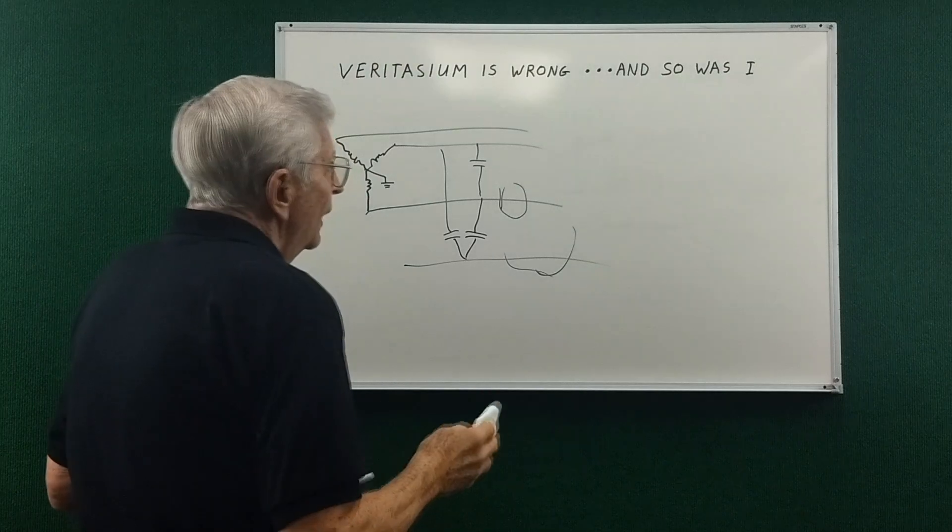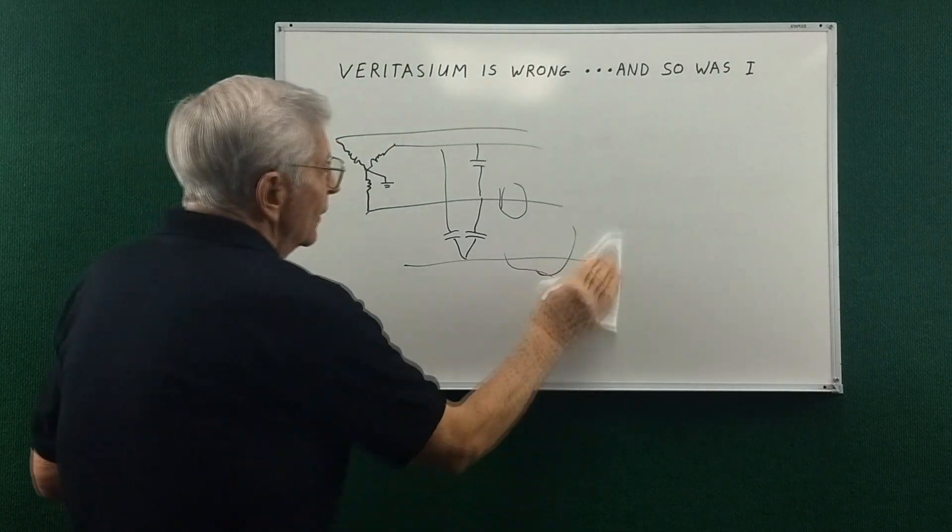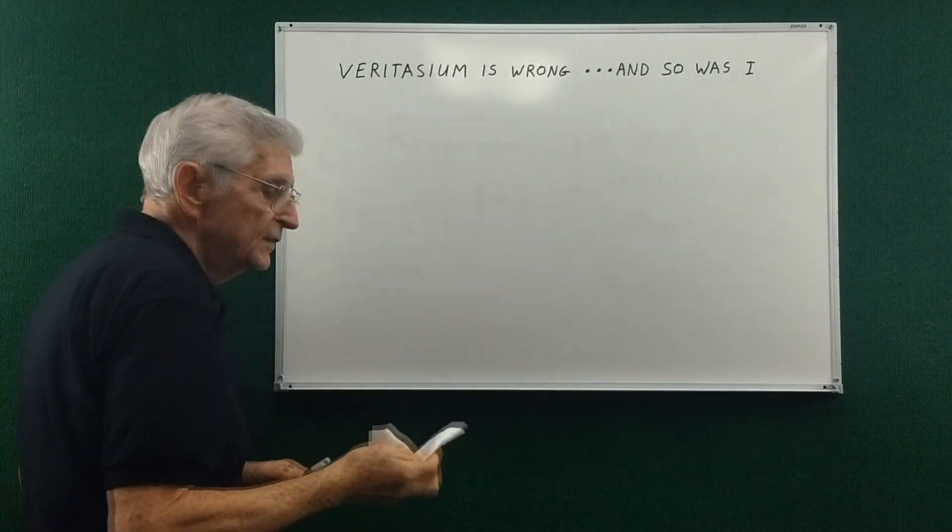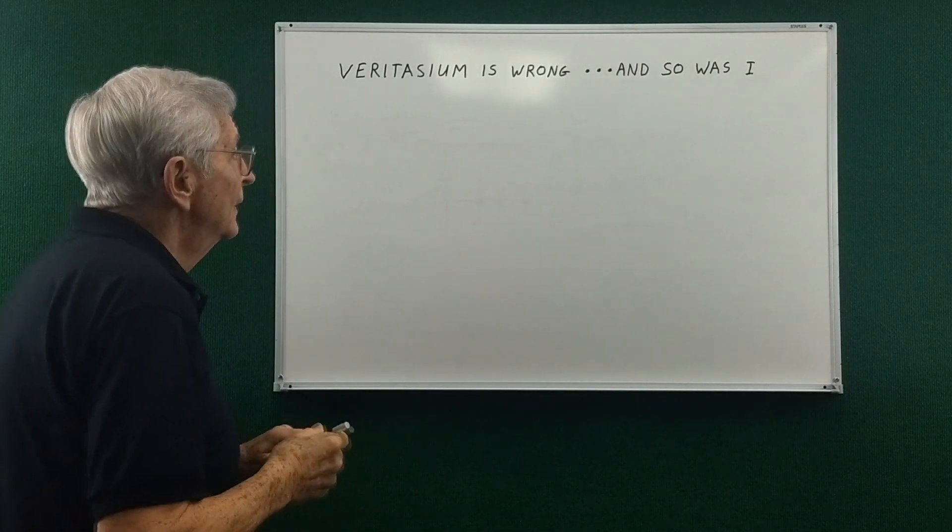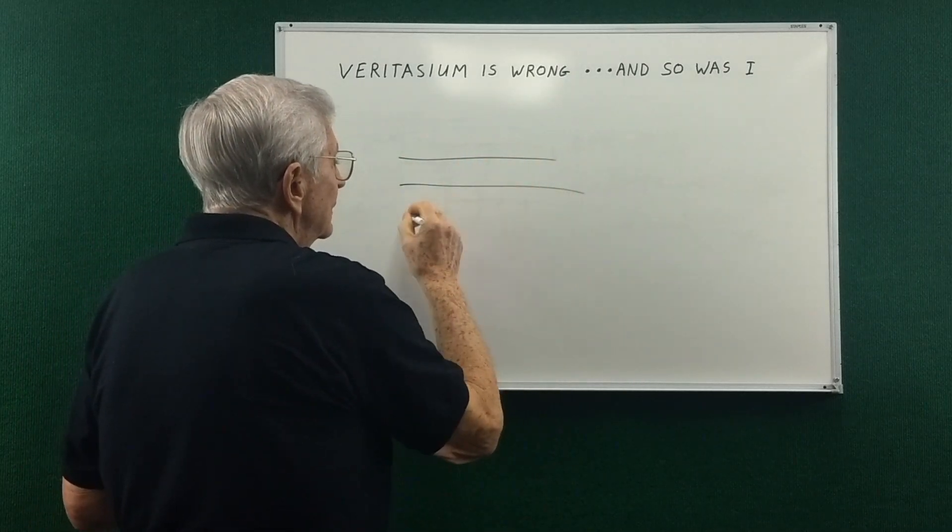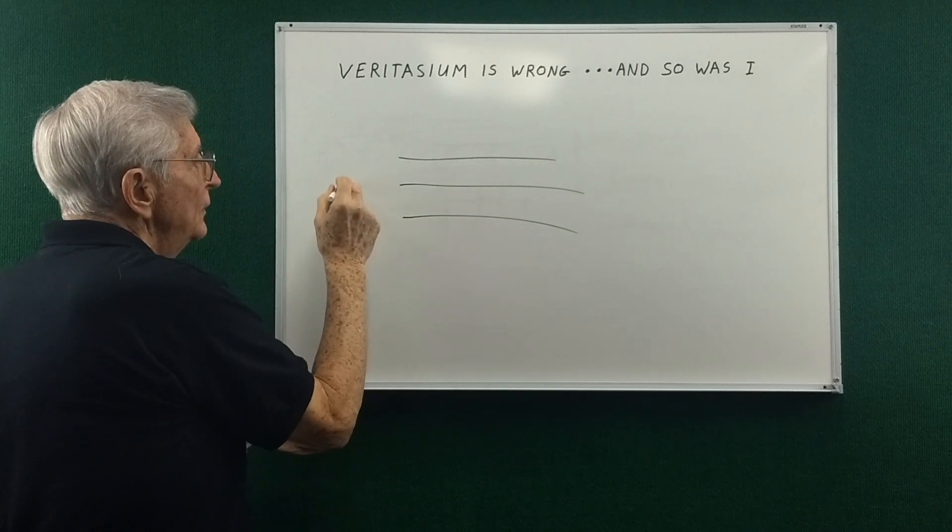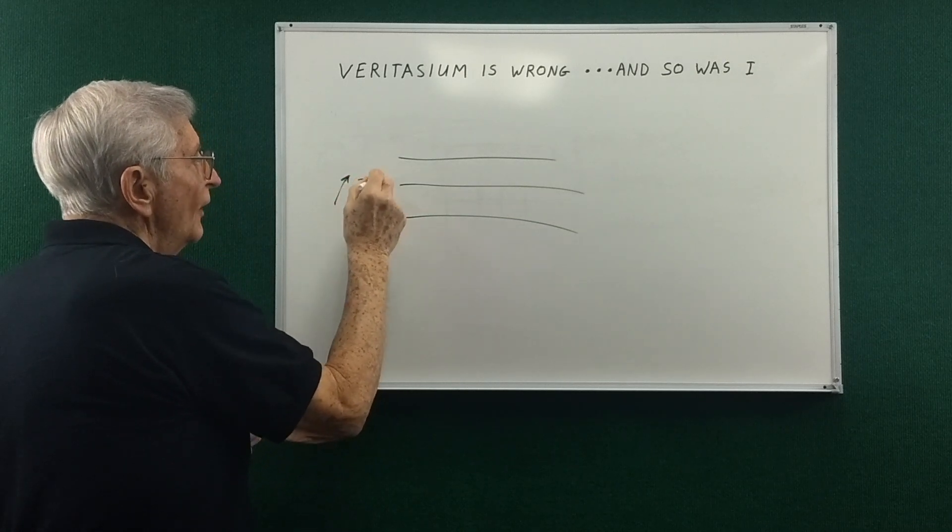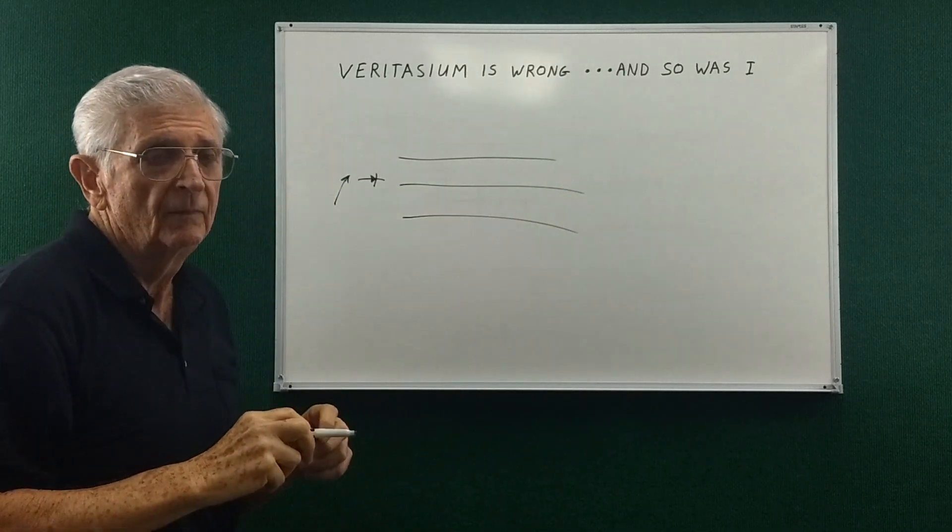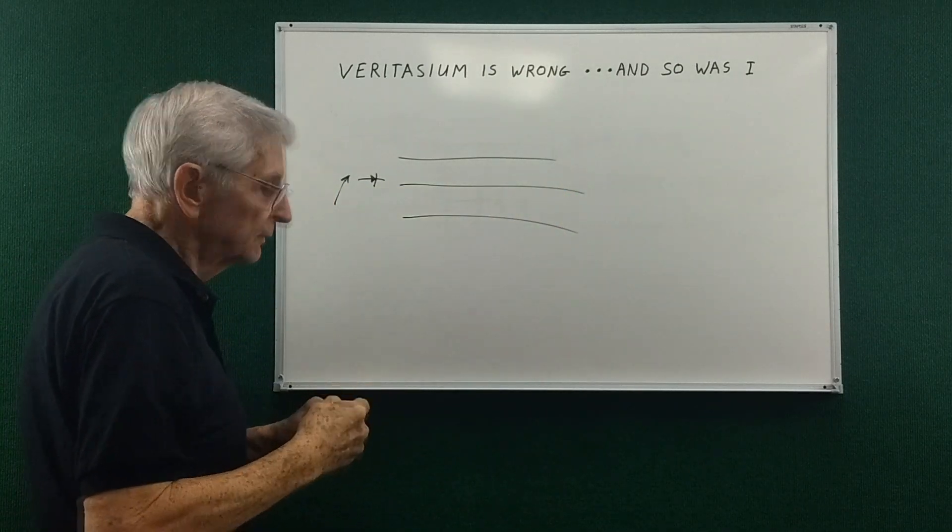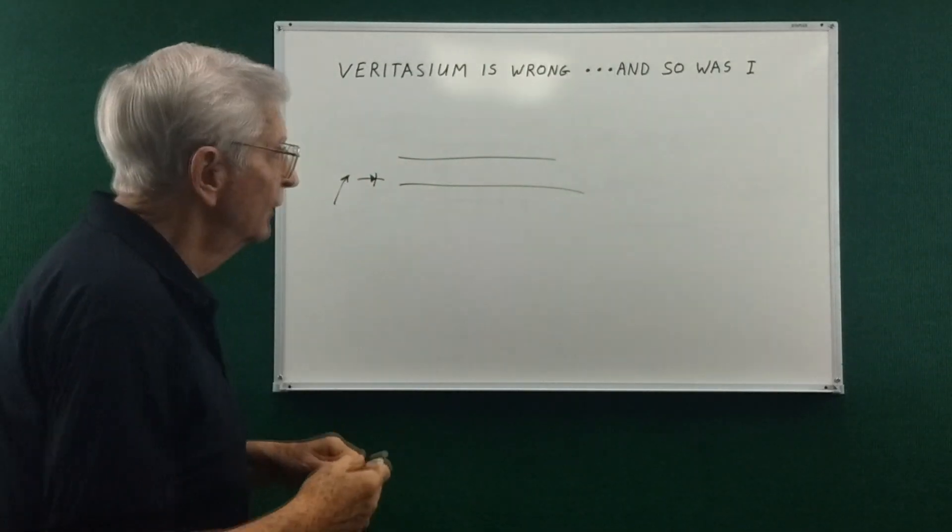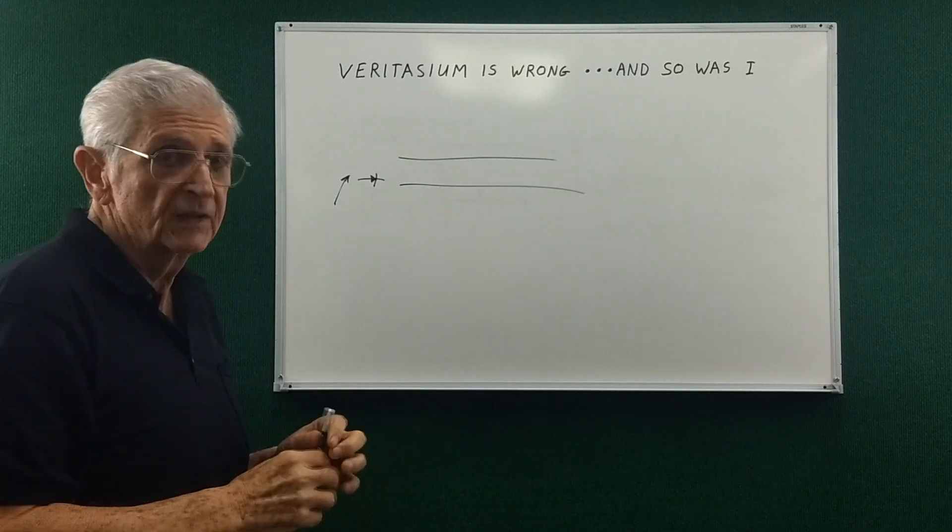There are places in the world where there's DC transmission lines. And the reason they're used, they step up the voltage and then rectify it and transmit DC power. And I'm not sure that they use three wires in that case. I only know that this process exists.